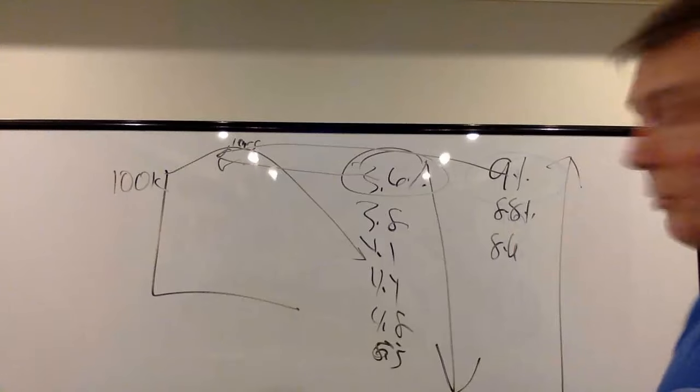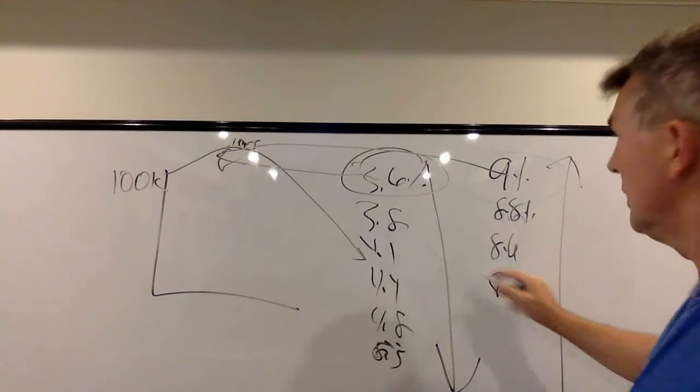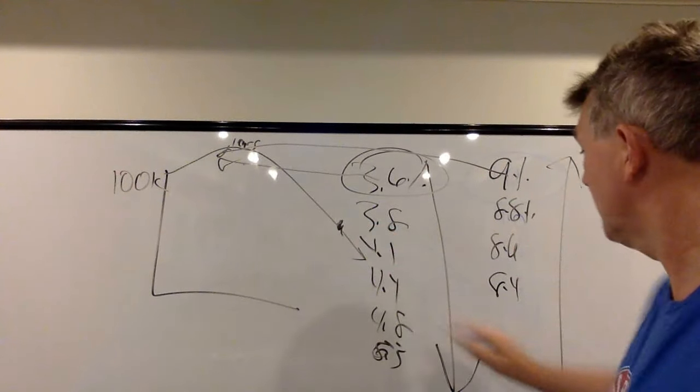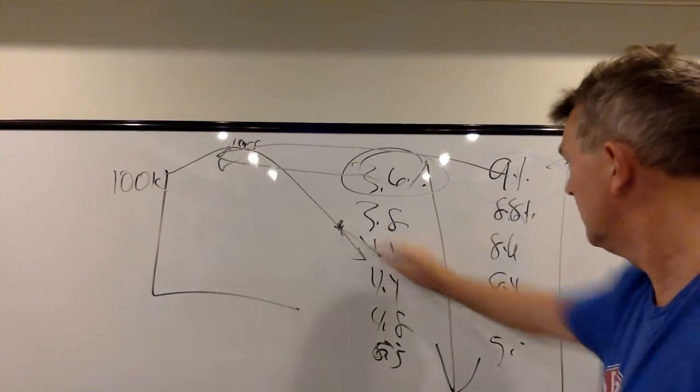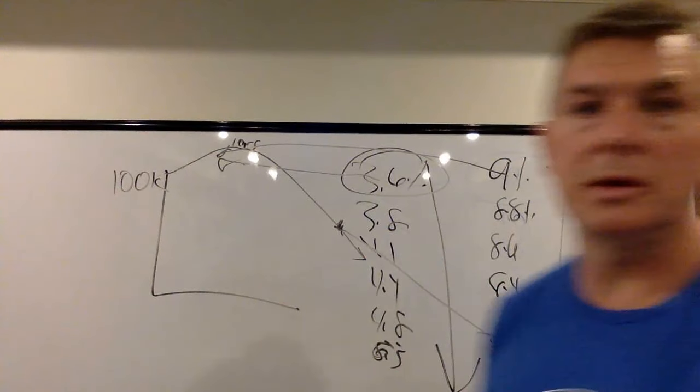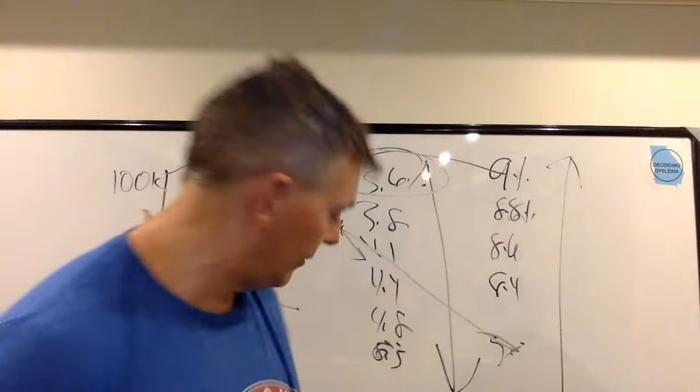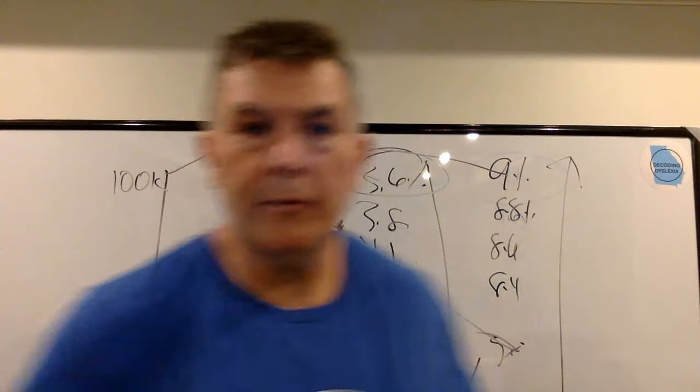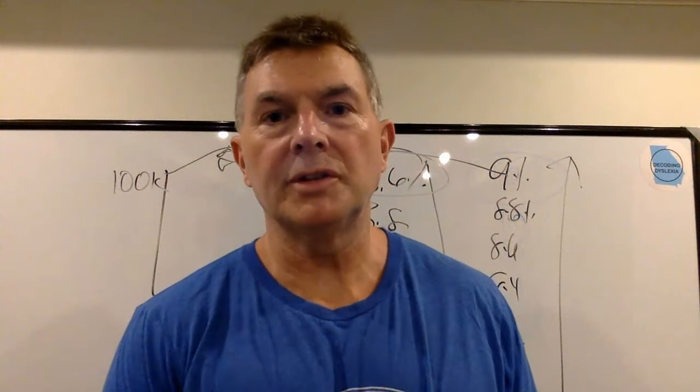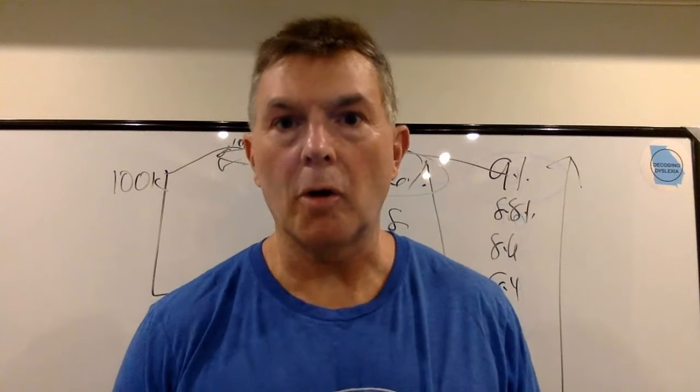Then as we get older we're taking a lower amount out. As we get older and we just don't get as active, we don't need as much money from our portfolio. So that's the origins of my Reverse RMD.